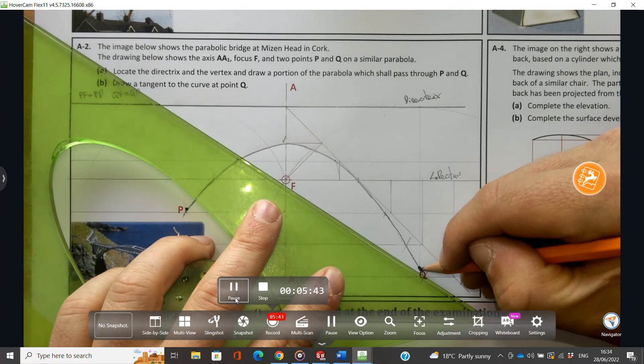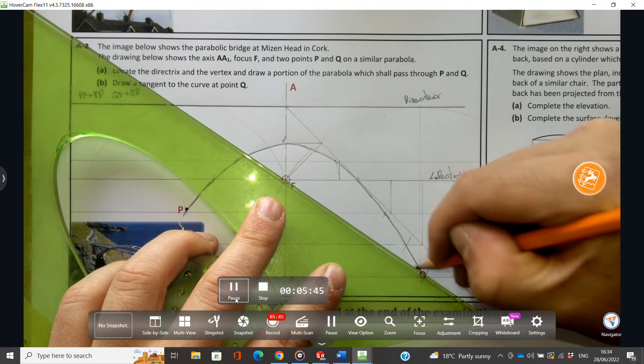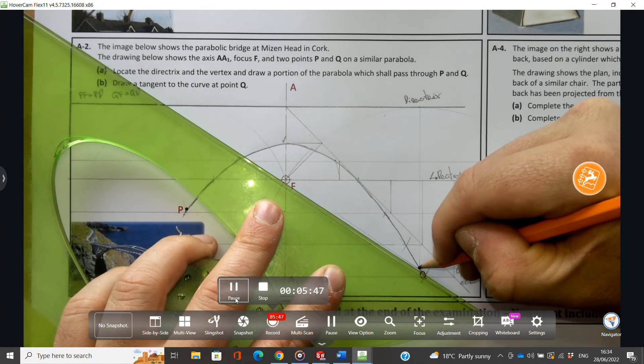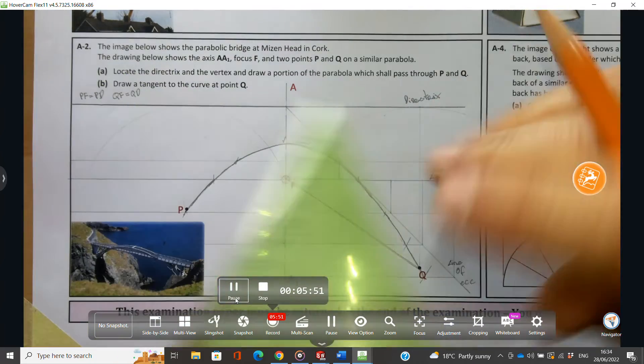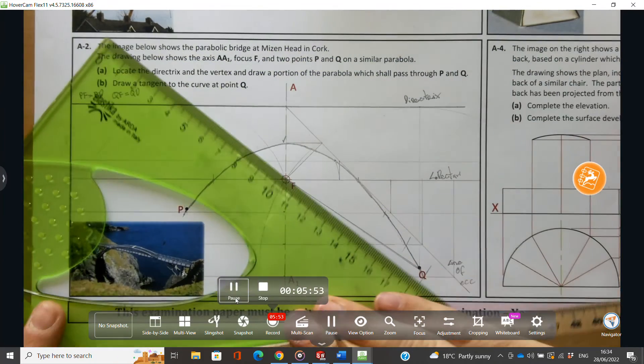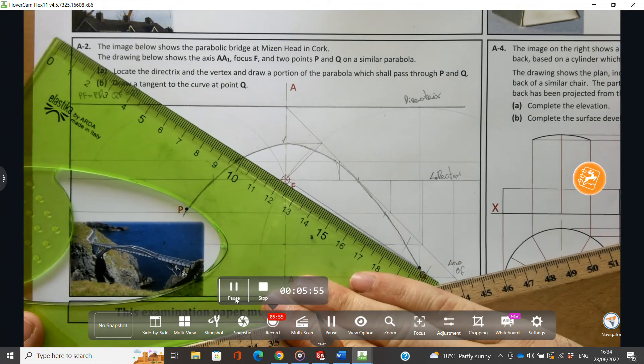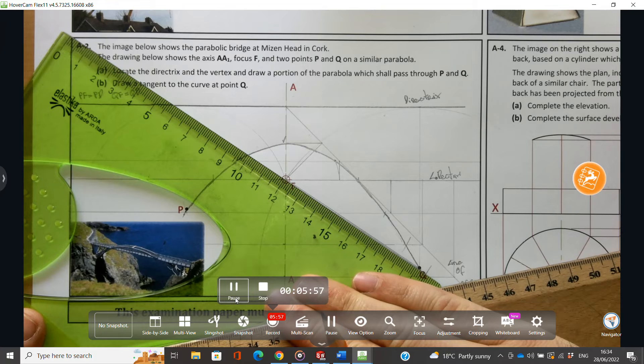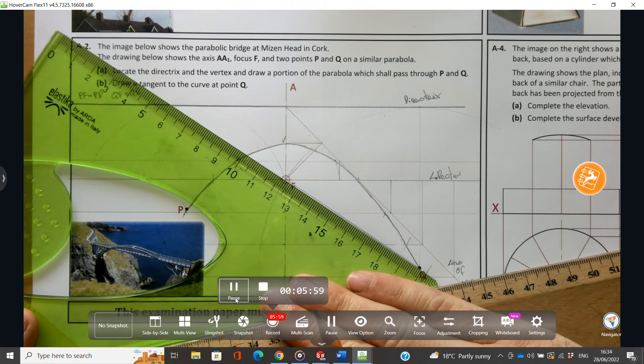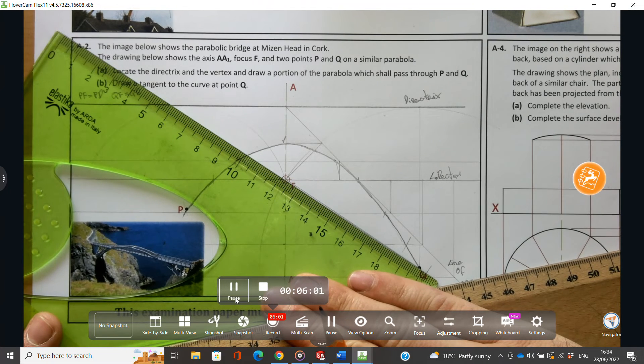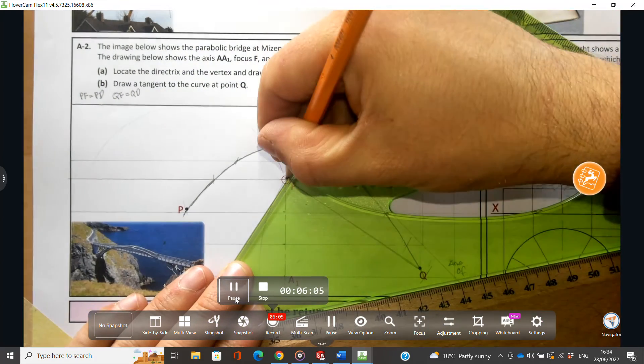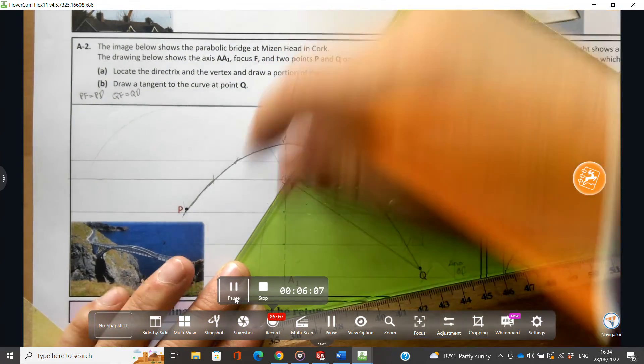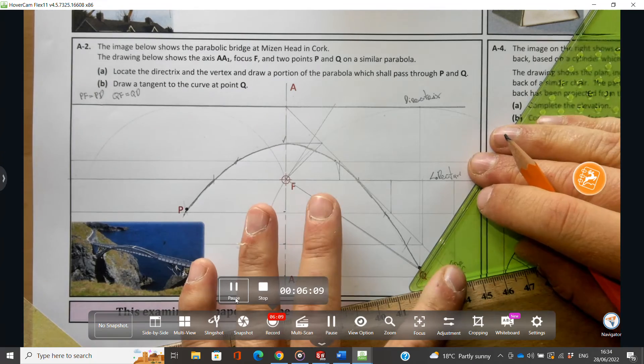So I'm going to join Q to F. I'm going to draw a line 90 degrees to line Q to F until I've touched the directrix. Here I'm going to go on here until I touch Q. There's my normal.